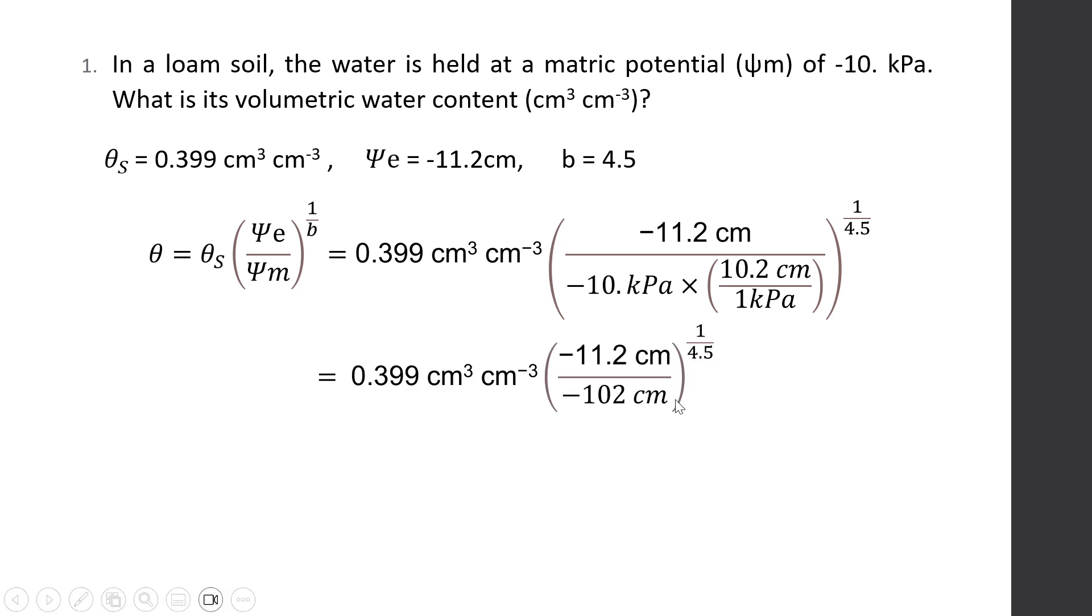In this case, we need first to divide the air entry potential, which is minus 11.2 centimeters, over the depth of water at minus 10 kPa, which is minus 102 centimeters. And raise the quotient to 1 over 4.5 or 0.22.